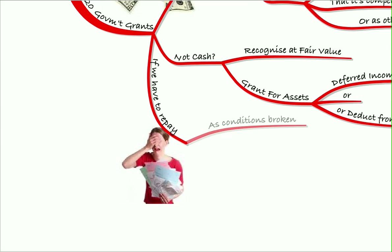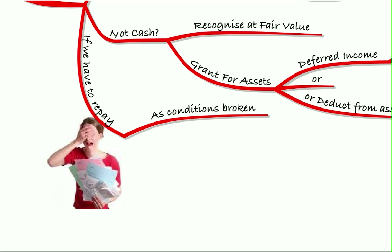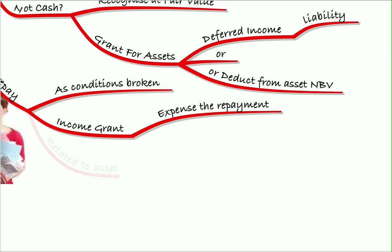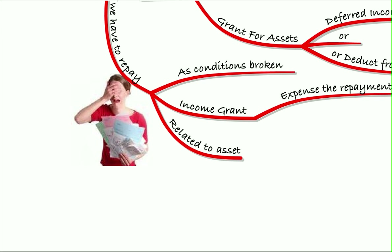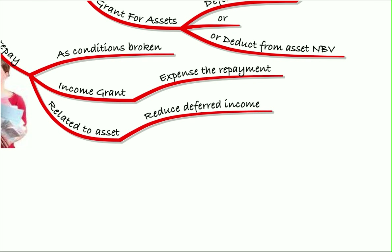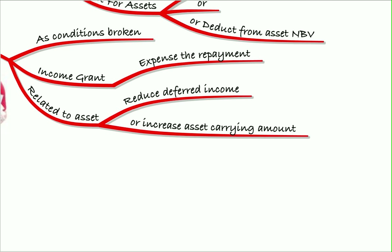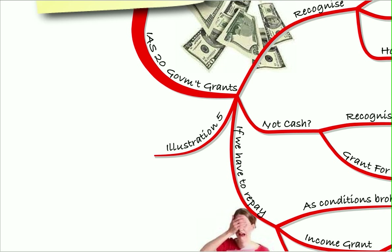We did an example of that in illustration five. If you have to repay the government grant — maybe the conditions have been broken — if it was an income grant, we simply expense the repayment. If it was related to an asset, we look at how we treated it in the first place: if we had put it to deferred income, we reduce the deferred income, or we increase the asset's carrying amount if that was the original treatment.